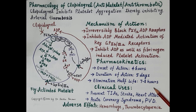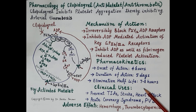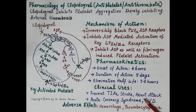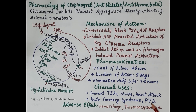Regarding clinical uses, since clopidogrel inhibits thrombosis in arteries, it prevents transient ischemic attack and stroke. By inhibiting formation of thrombus in coronary blood vessels, it also prevents heart attack. It is useful in acute coronary syndrome such as unstable angina and prevention of MI.